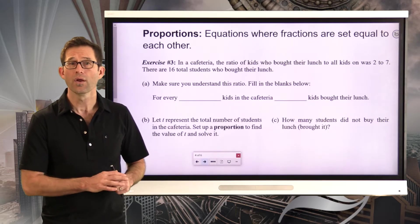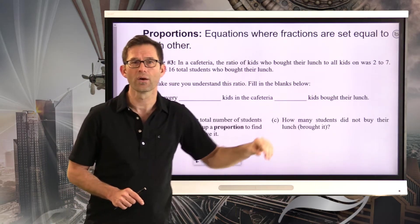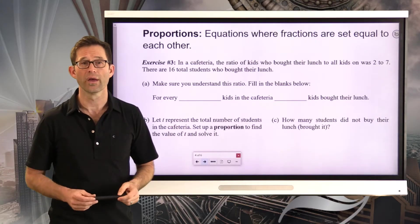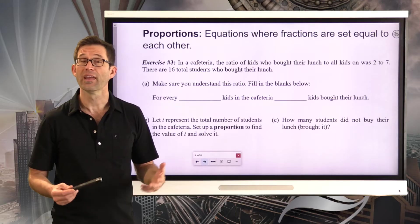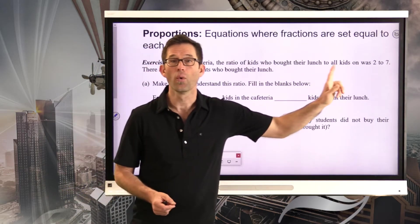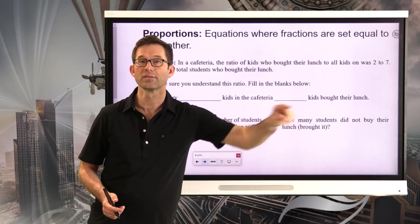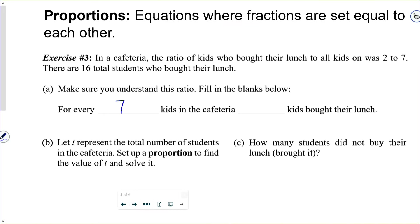In a cafeteria, the ratio of kids who bought their lunch to all kids was 2 to 7. There are 16 total students who bought their lunch. Letter A, make sure you understand this ratio. Fill in the blanks below. What I'd like you to do is read through the problem, really read through it and understand what we're saying here and then try to fill in letter A on your own. Pause the video now.